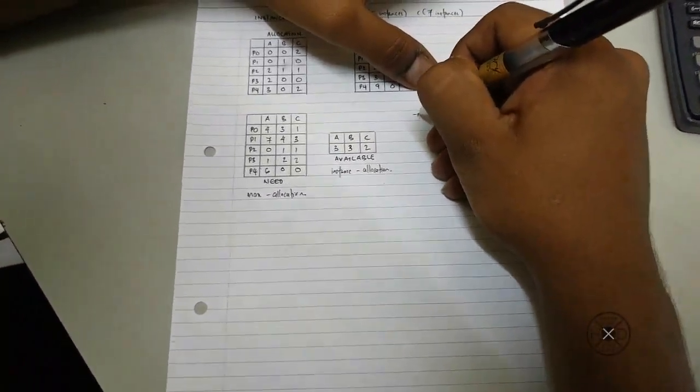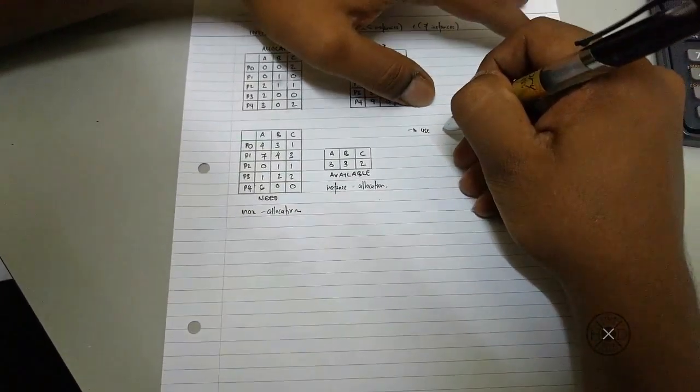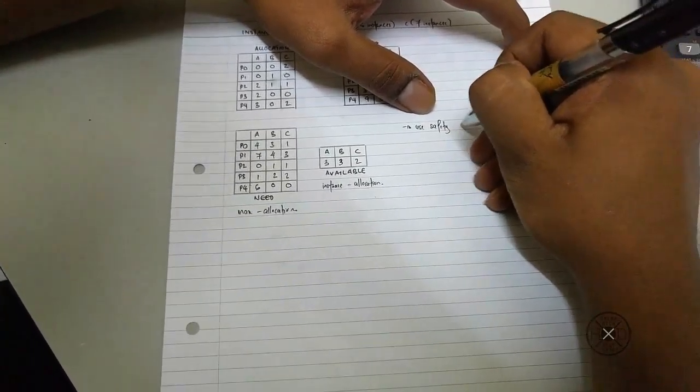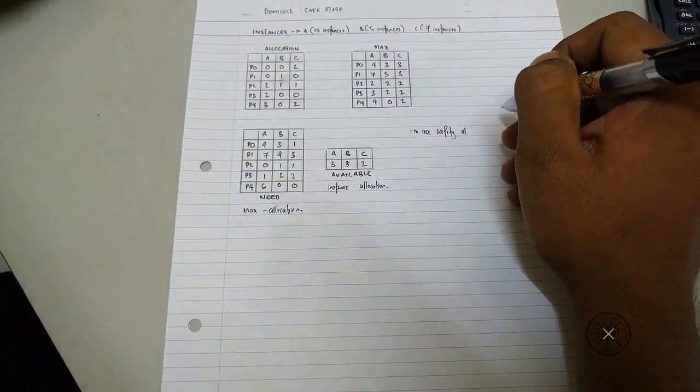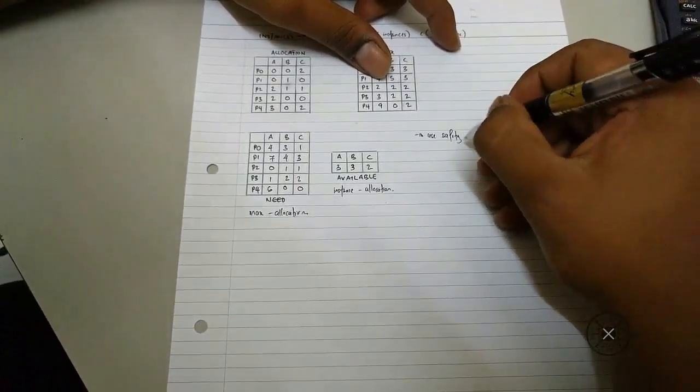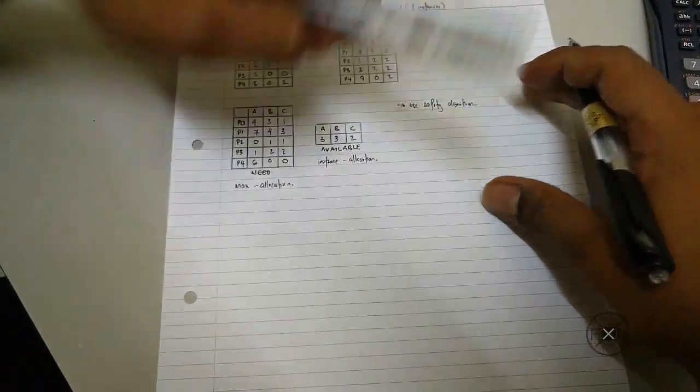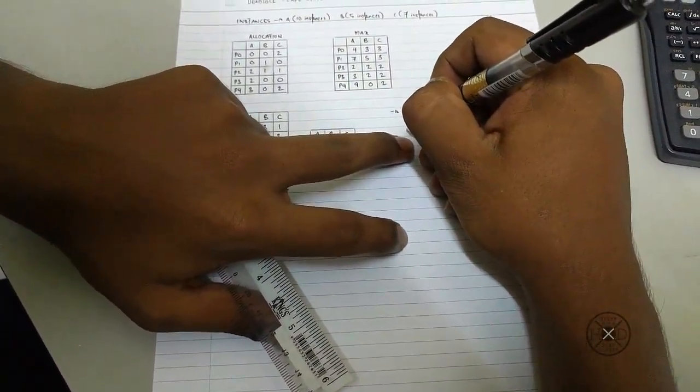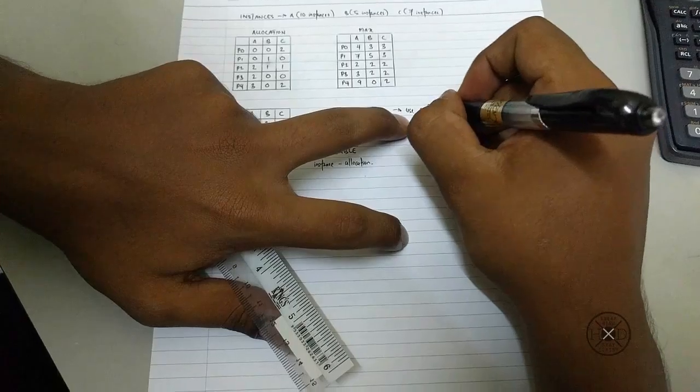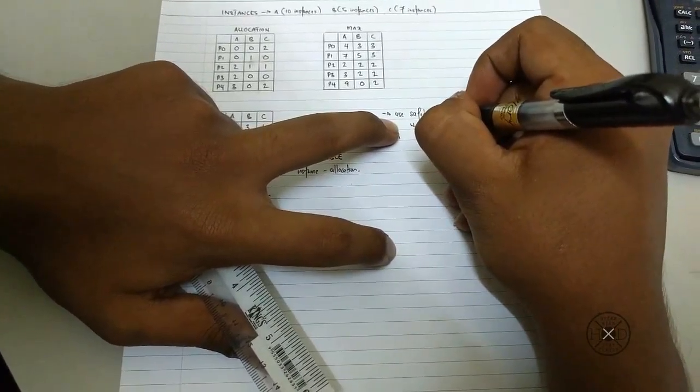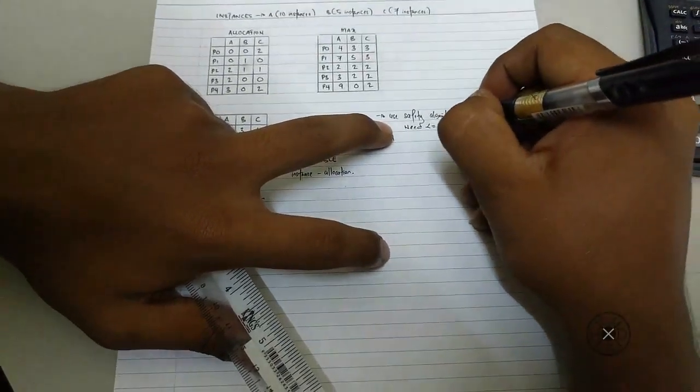Now we will use safety algorithm to check whether the system is in safe condition or not. For process 0, the formula for safety algorithm is need is less than equal available.